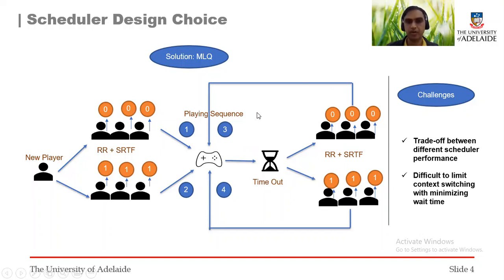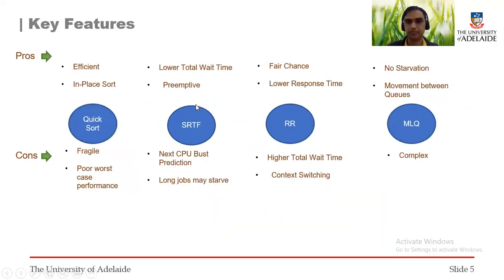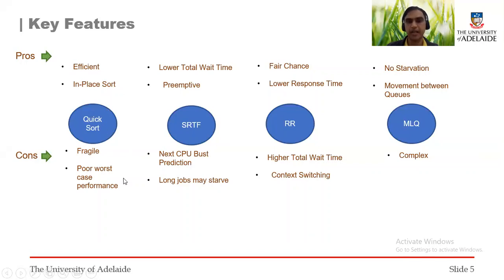We have four different queues and this shows their playing sequence. These are some of the key features of this scheduler. We have used the quicksort algorithm to maintain the SRTF queue because it is efficient, fast, and allows in-place sorting. However, it is fragile and can generate worst-case performance, though this is very rare.